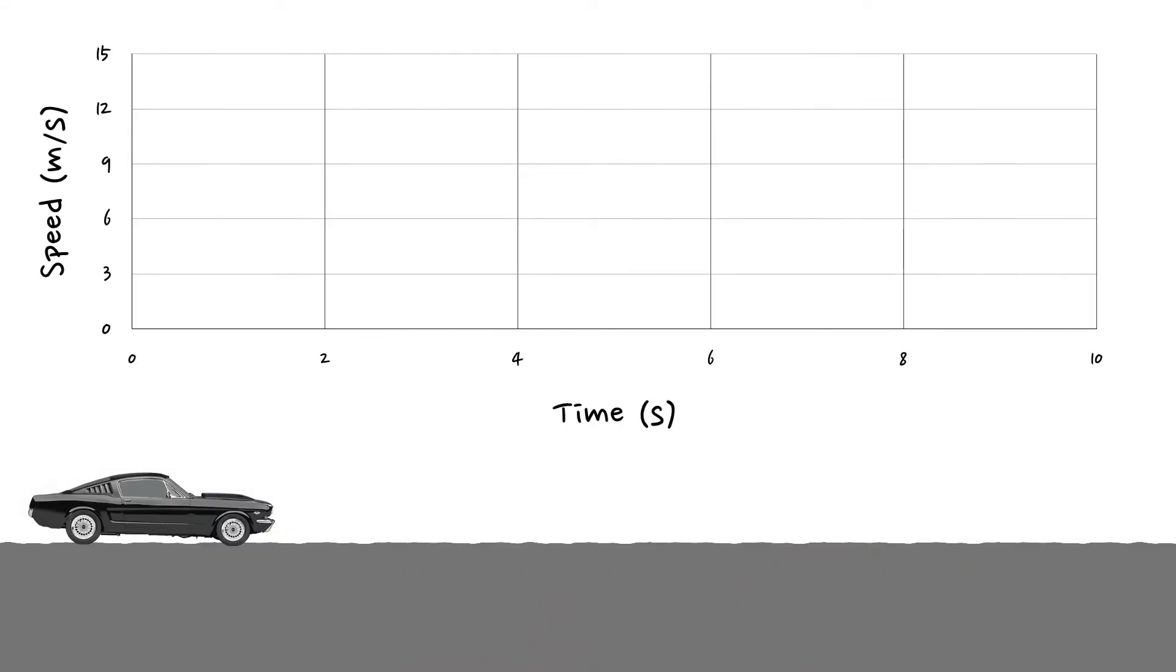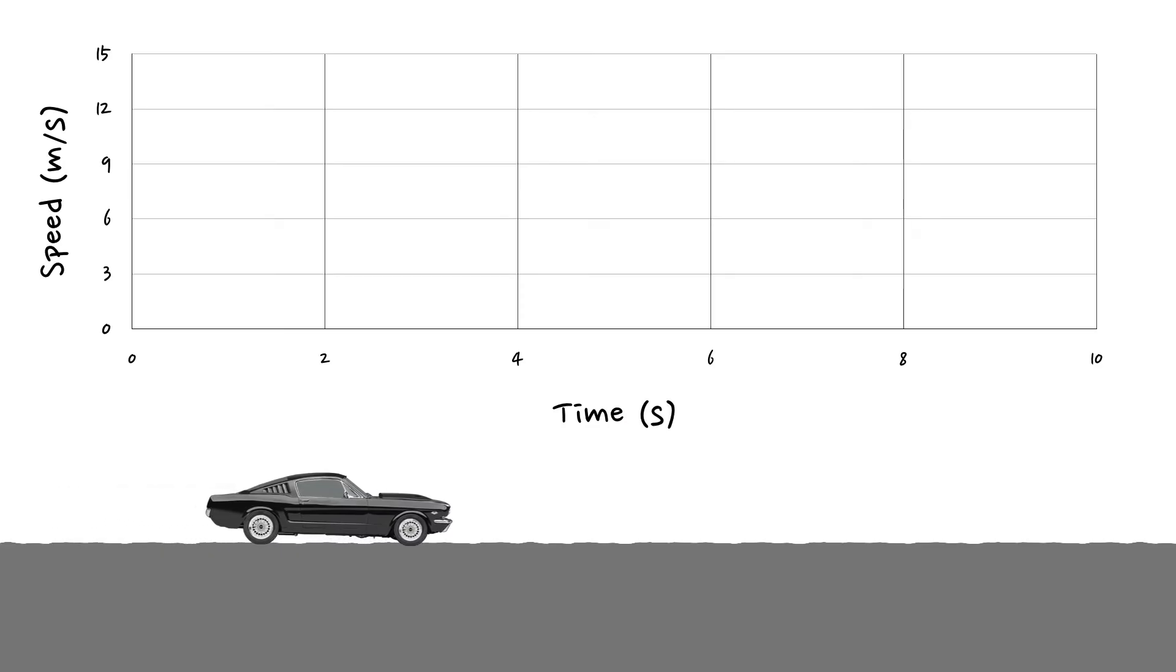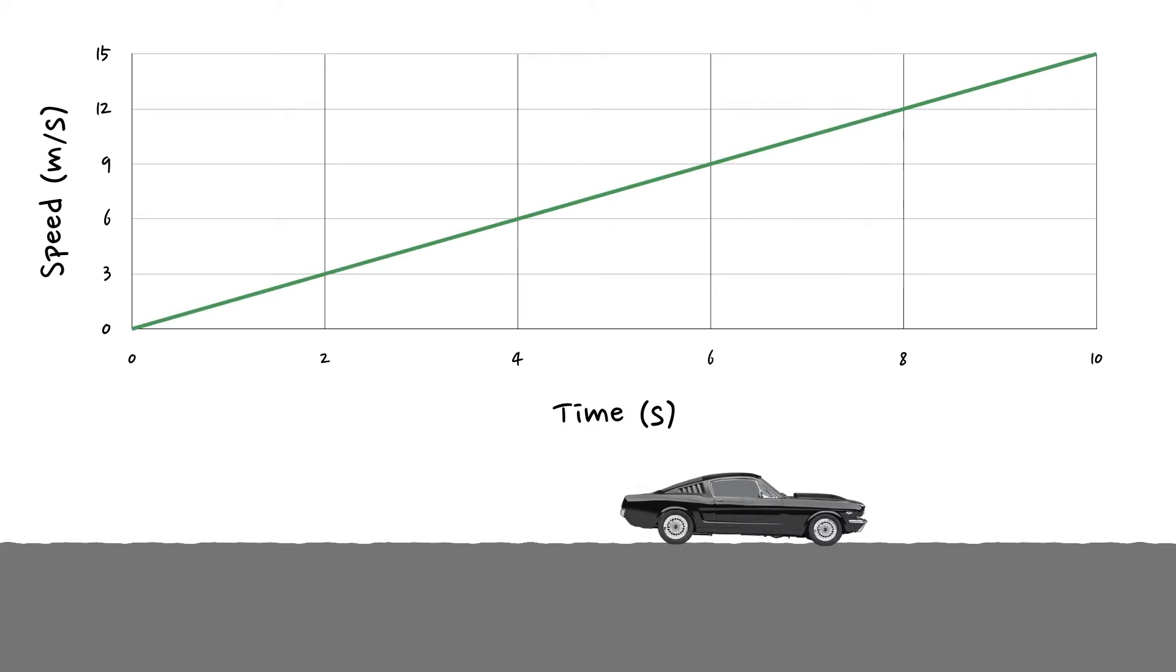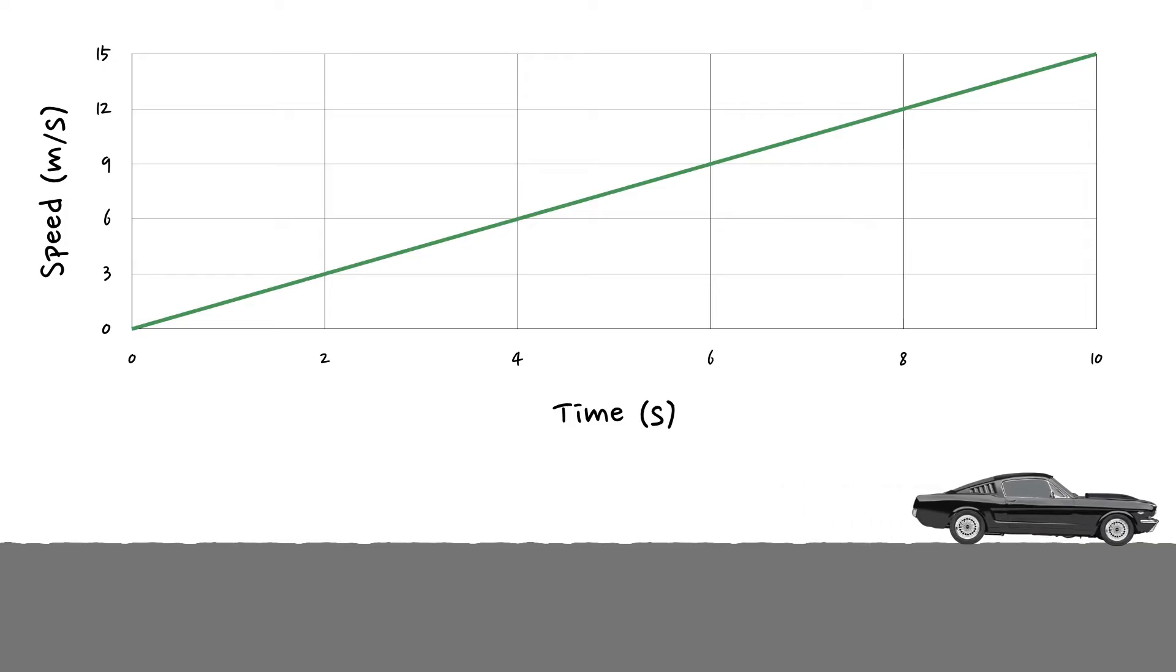Let's start with a simple example. Here we've got a car that is going on its journey. It begins at zero meters per second because it's standing still. As it goes on with its journey, its speed increases and increases and increases.